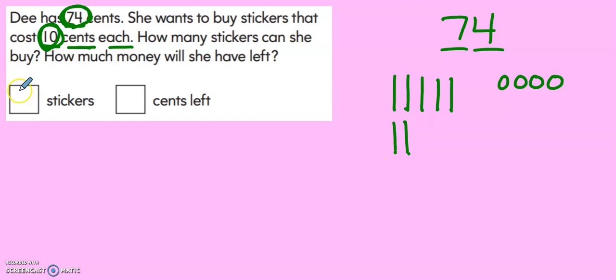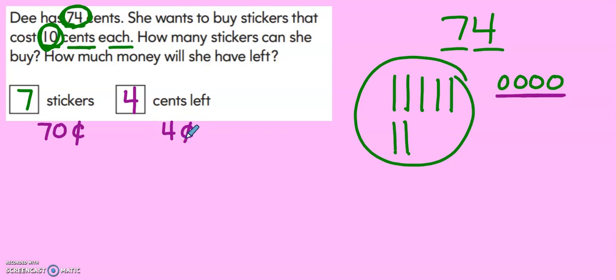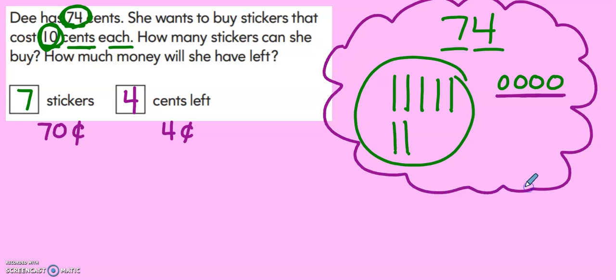So she can get 7 stickers, since they are 10 cents each. And then I see that she will have 4 cents left over. Her 7 stickers will cost her 70 cents and she has 4 cents left over after buying her stickers.